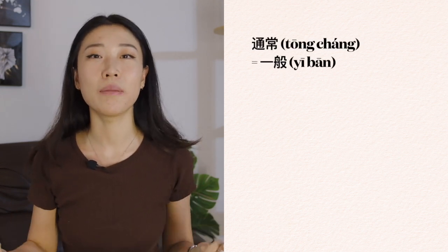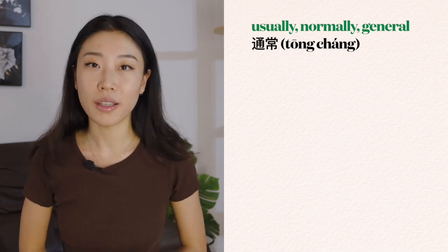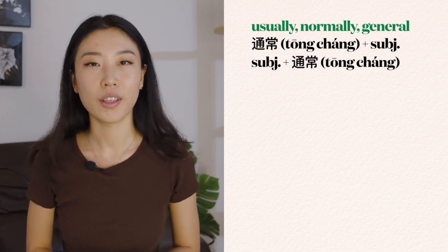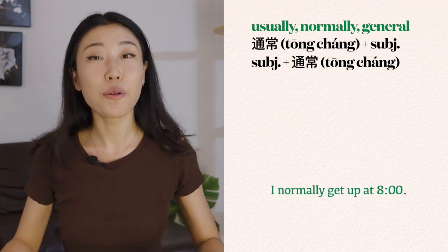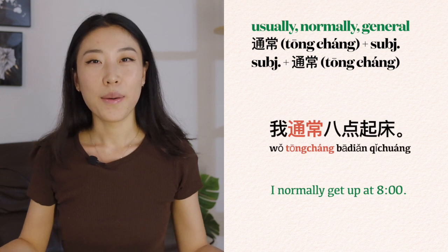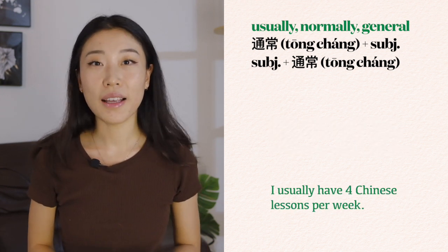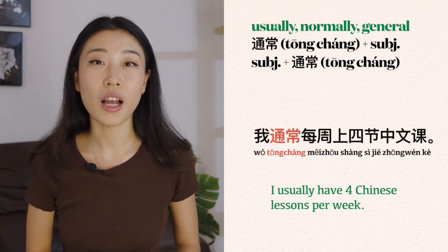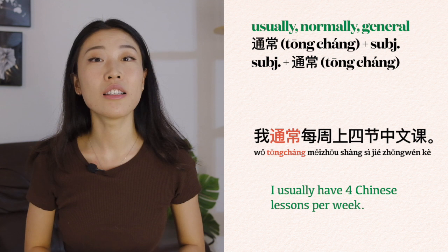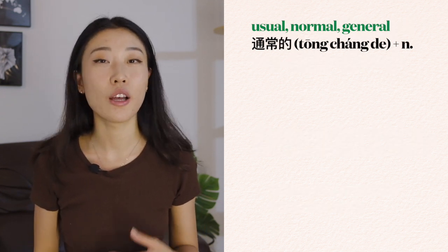Now let's move on to 通常. In most cases, 通常 and 一般 are interchangeable. 通常 also means normally, usually, or general. The way of using it is the same as 一般. 我通常八点起床 — I normally get up at 8. 我通常每周上四节中文课 — I usually have four Chinese lessons per week.